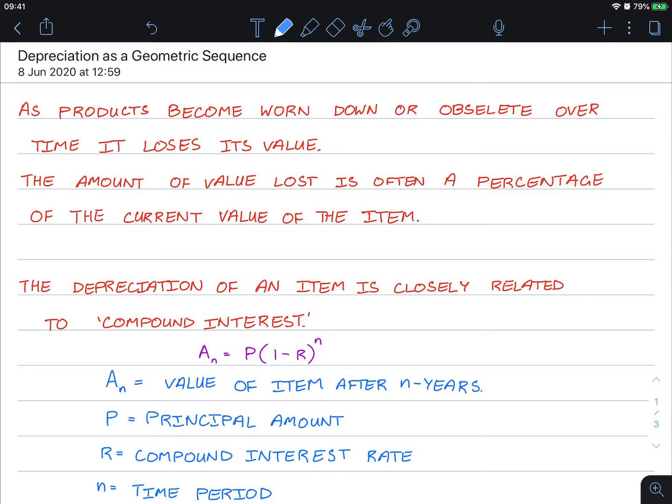Hello class, this is a video tutorial on depreciation as a geometric sequence. As products become worn down or obsolete over time, it loses its value. The amount of value loss is often a percentage of the current value of the item.